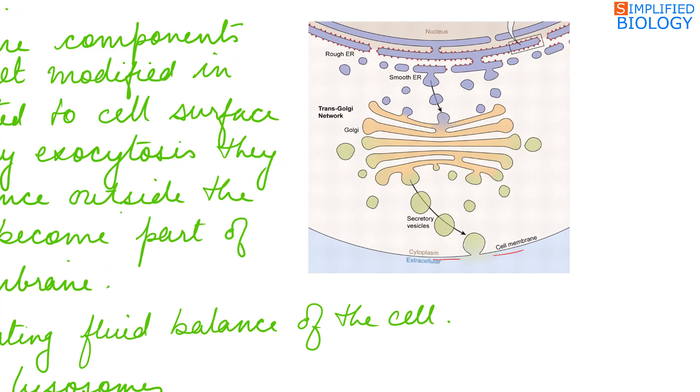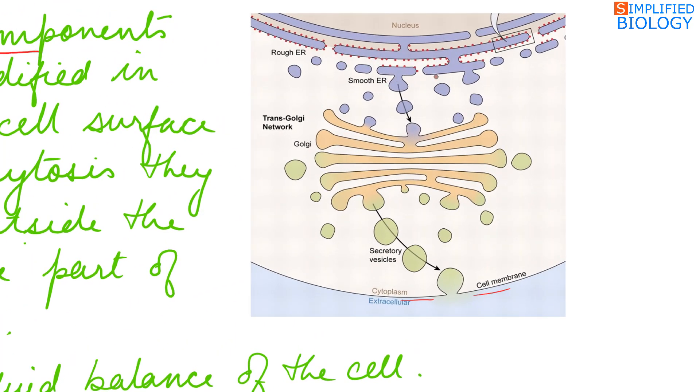Cell membrane components formed by the endoplasmic reticulum are released as vesicles which then fuse with the cisternae where they get modified. They are then released by the Golgi cisternae as vesicles.